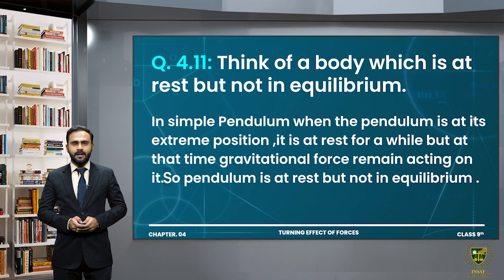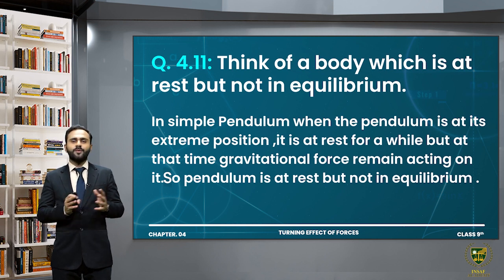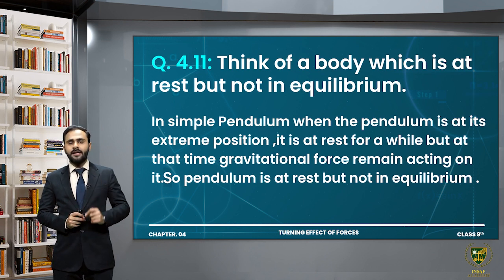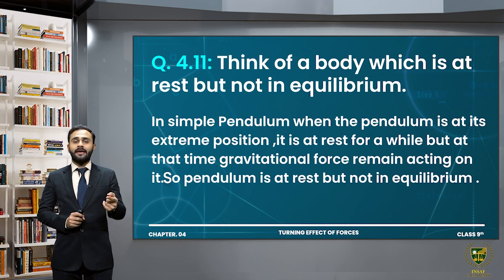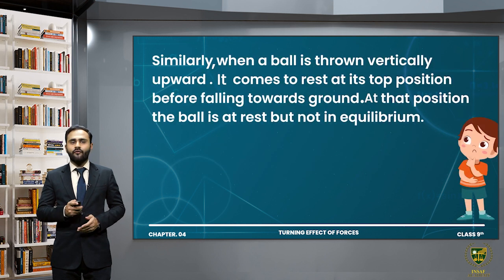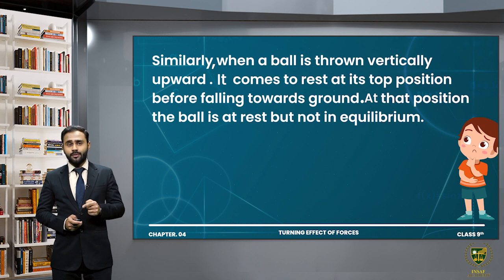Question 4.11: Think of a body which is at rest but not in equilibrium. A simple pendulum — when the pendulum is at its extreme position during to-and-fro motion, it stops for a while, so it is at rest. But gravitational force is still acting on it, so it is not in equilibrium. Similarly, when a ball is thrown vertically upward, it comes to rest at the top position before falling — at that position the ball is at rest but not in equilibrium.